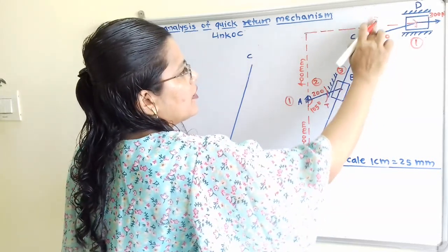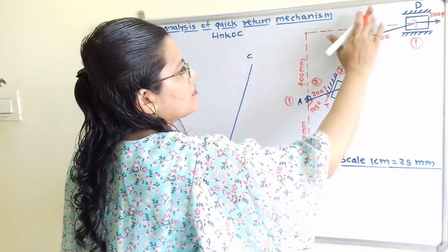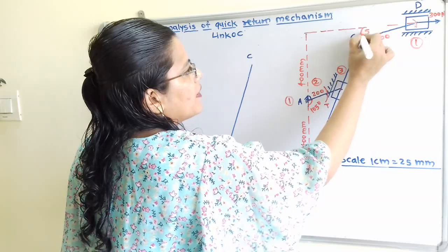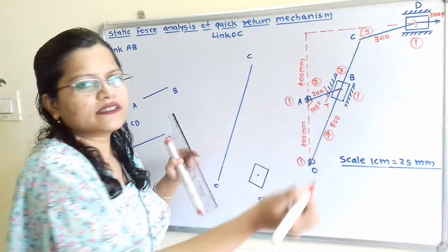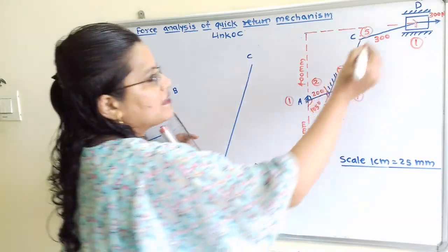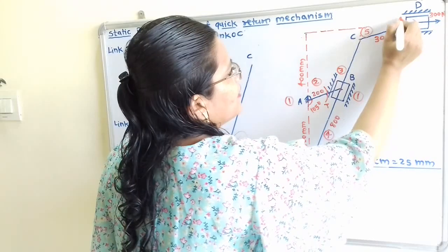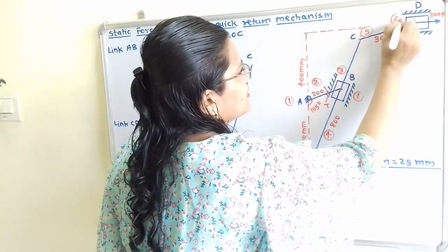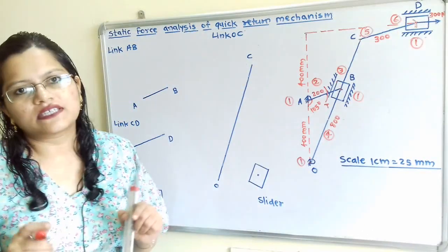Continuing the numbering: link CD is number 5, and the slider at point D is given link number 6.